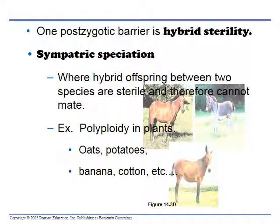Polyploidy is found in plants only — strawberries, oats, and potatoes are examples. A polyploid plant cannot breed with the original plant because you'd end up with an odd number of chromosomes. If something has eight chromosomes and its gamete has four, and it tries to breed with a haploid gamete, you end up with an odd number, and you can't form homologous pairs during meiosis. Polyploidy in plants is actually more common than you might think.